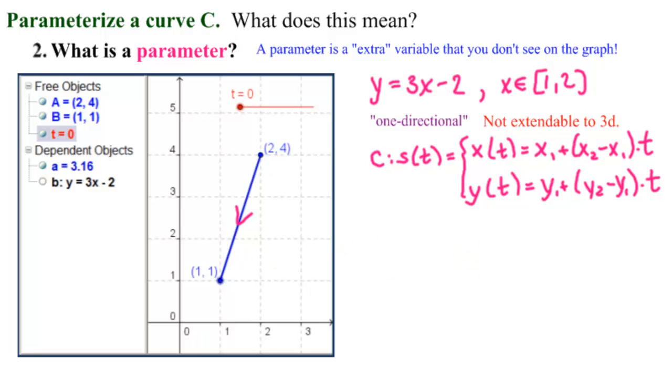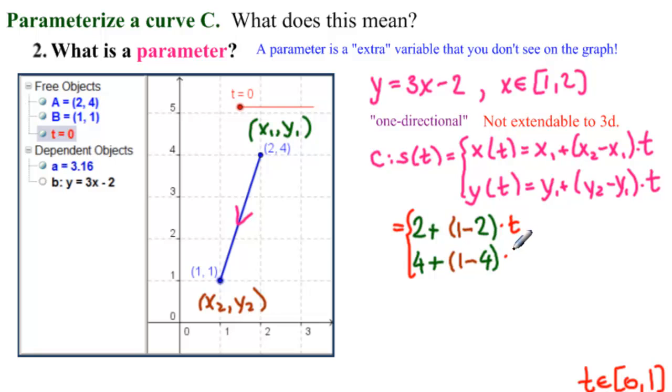So let's substitute. What would we have? This point is our X1, Y1. And this point down here is our X2, Y2. And like we said, we want our interval to be T from zero to one. So what do we have? We're just going to substitute. X1 is two plus, and then we have this one down here, one minus two times T. And then Y1 is four plus this one here, one minus four times T.